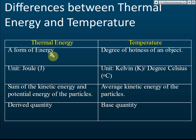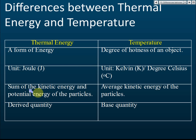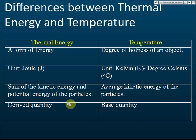Differences between thermal energy and temperature: thermal energy is a form of energy, but temperature is just a measure of the degree of hotness — it's not energy. Thermal energy uses the unit joule, while temperature uses kelvin or degrees Celsius. By definition, thermal energy is the sum of kinetic and potential energy of the particles (molecules or atoms), while temperature measures the average kinetic energy of the particles. Thermal energy is a derived quantity; temperature is a base quantity.